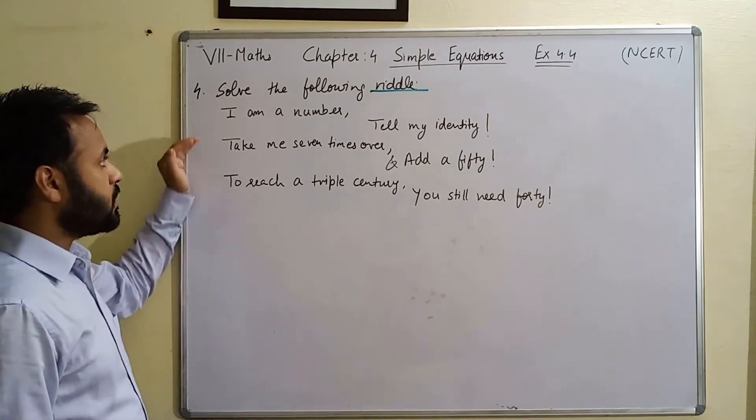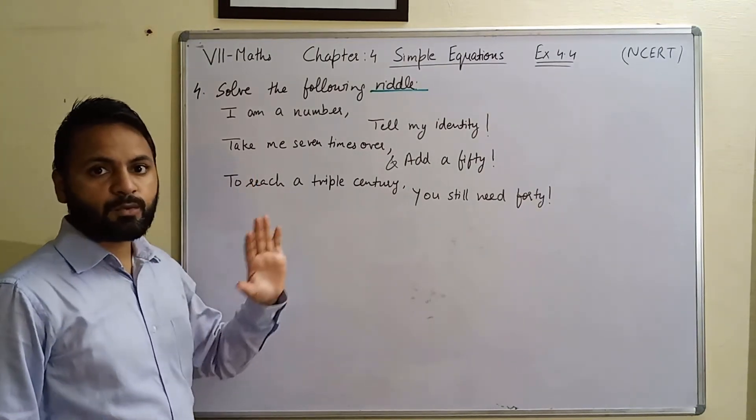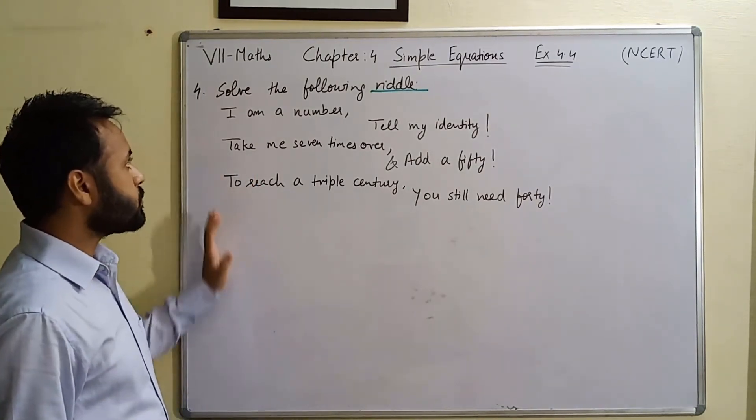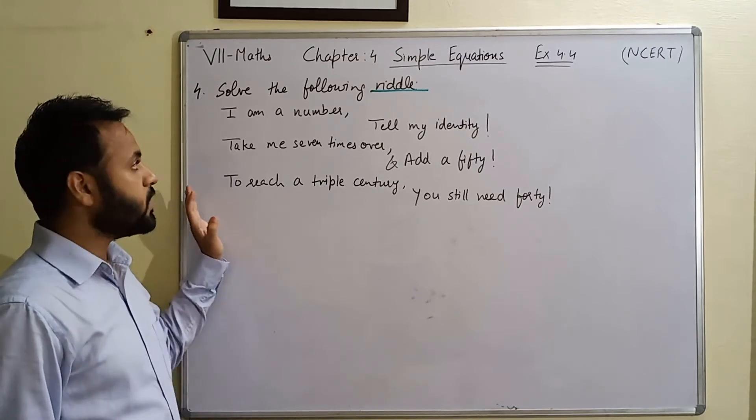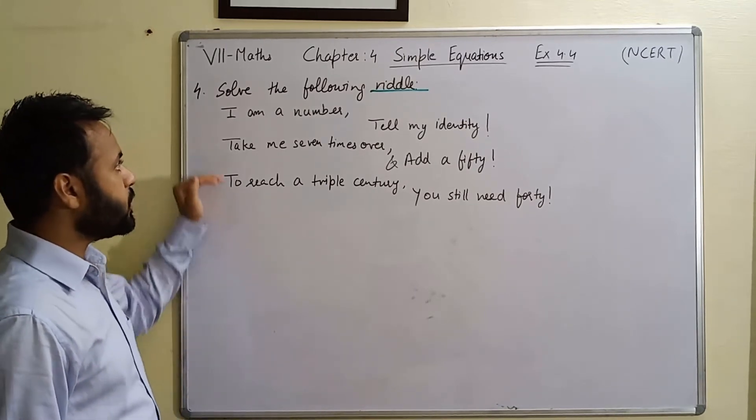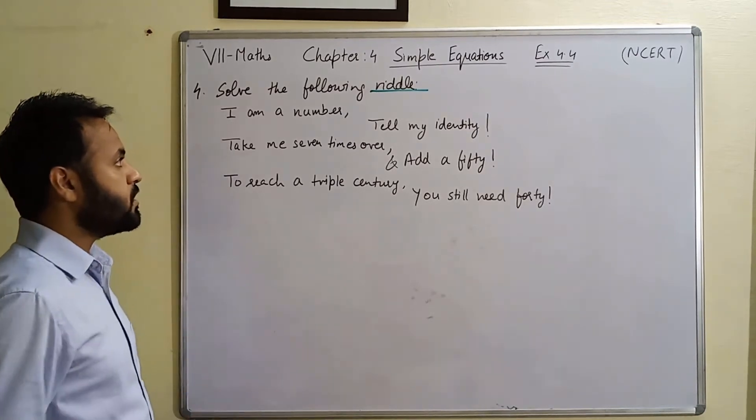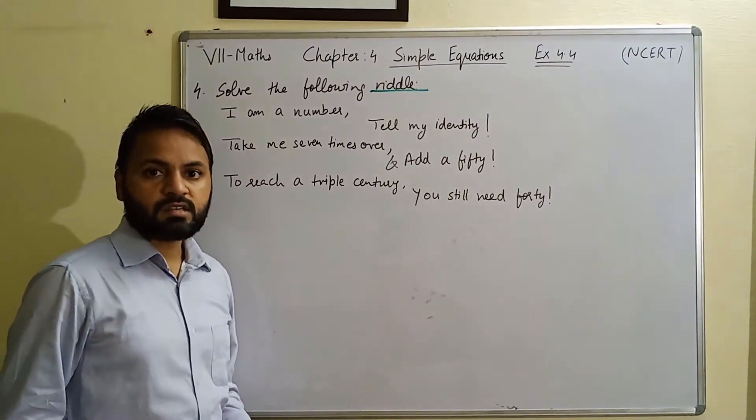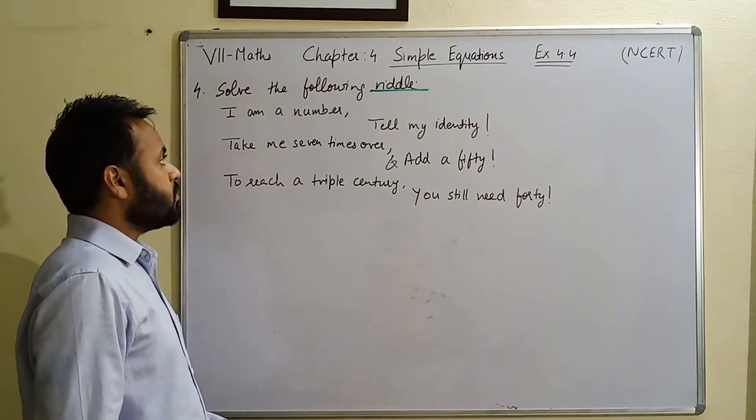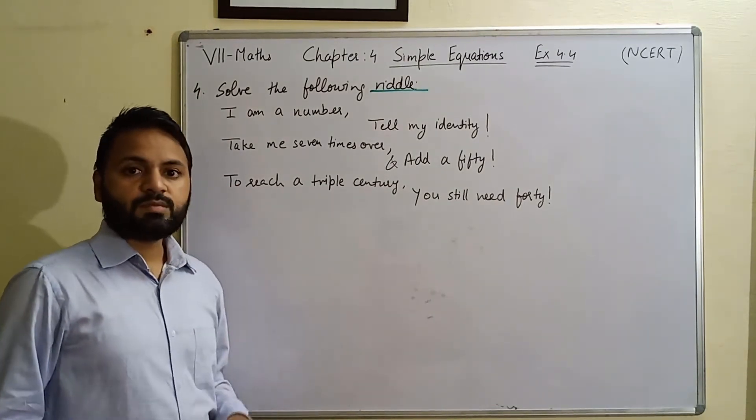So a statement like this is given. This is written in a poetic way. So we have to solve this riddle. We have to tell the mathematical equation and we have to tell what the number is going to be. They are all like mathematical riddles only. So we have to solve this like the other questions.